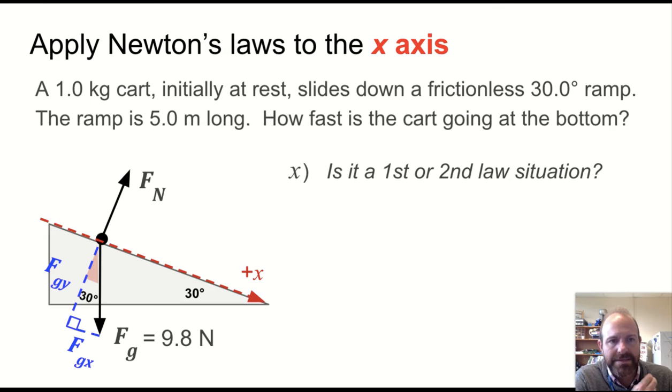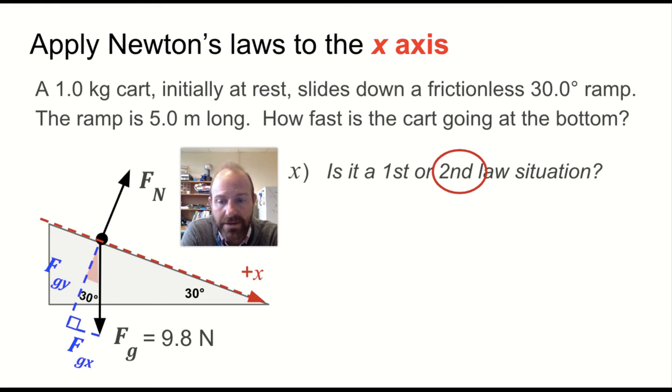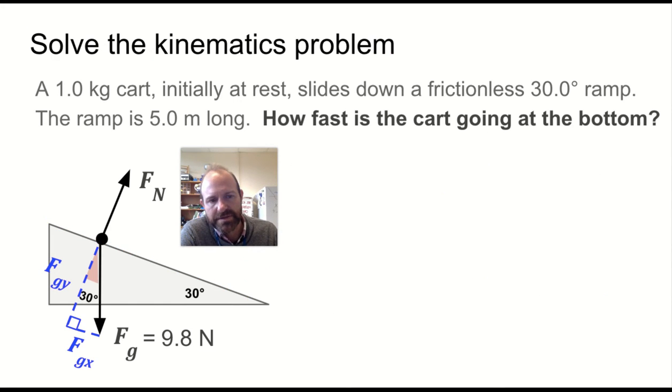Now we can do the x-axis, and this is the one where we actually get most of our information. For the x-axis direction, this is a second law situation. We are accelerating. The cart is accelerating down the ramp. Net force in the x equals ma. A is the thing we're looking for. Our fgx is already solved. That is our net force divided by the mass, giving us about 4.9, about 5 meters per second squared.